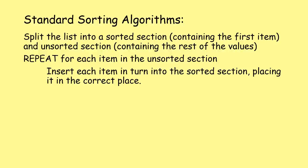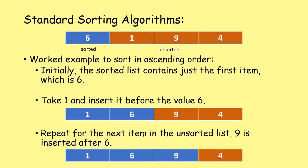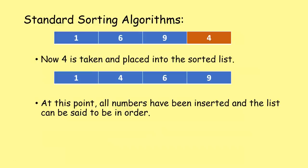Worked example sorting into ascending order. The sorted list just contains the first item, which is six. One, nine, and four are in the unsorted section. We take the first item from the unsorted section and insert it in the right place in the sorted list - obviously one comes before six. We repeat this for nine, inserting it after the six. Then four is placed into the correct order. Now all numbers are in the sorted list, the unsorted list is empty, and the list is in order.